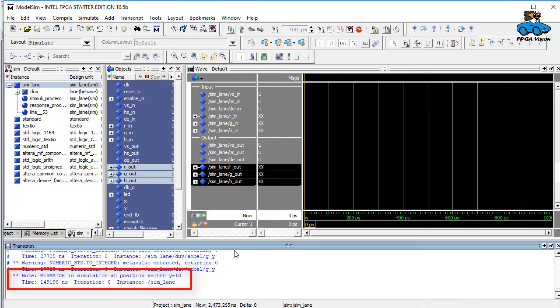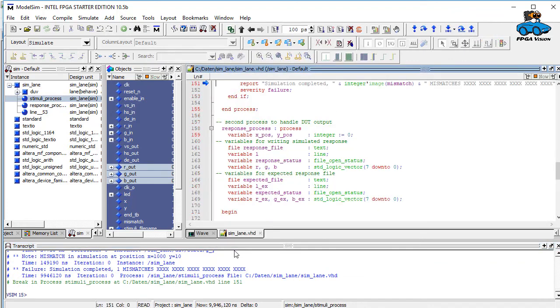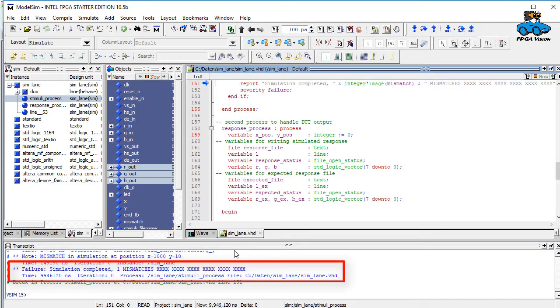So this is exactly the error we wanted to see. The self-checking testbench is working. It has found the mismatch between expected result and the simulation result of our design under verification. Now the simulation is completed and we get the message that there has been one mismatch in the simulation.